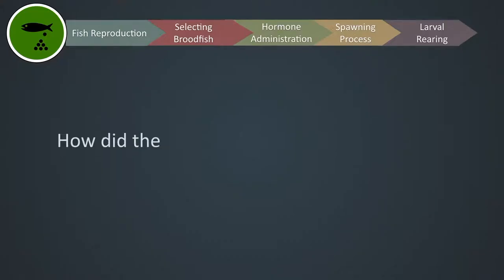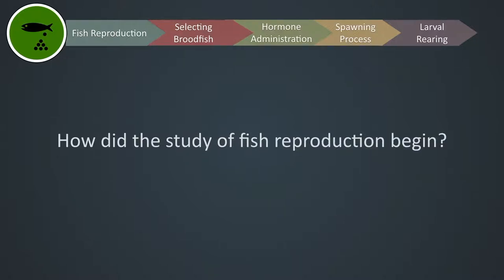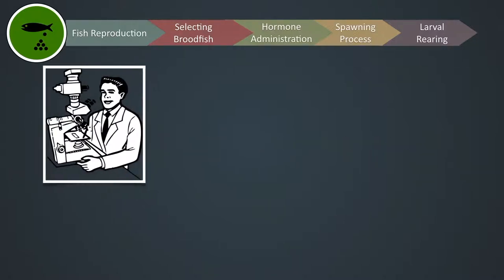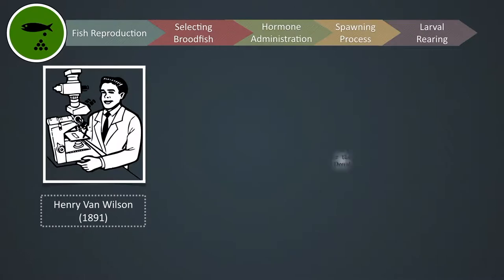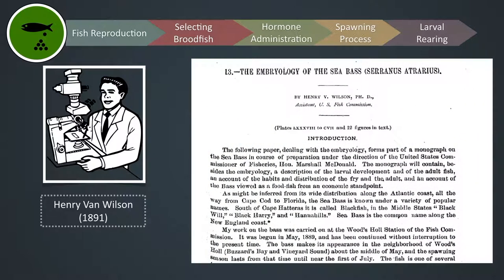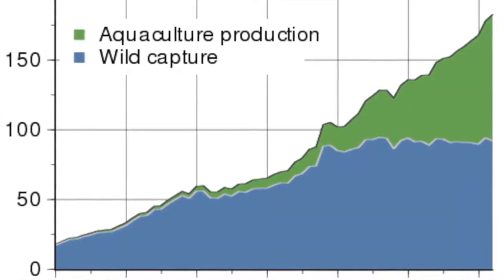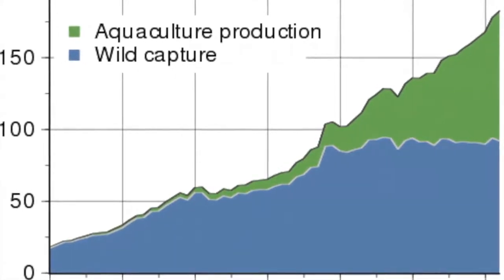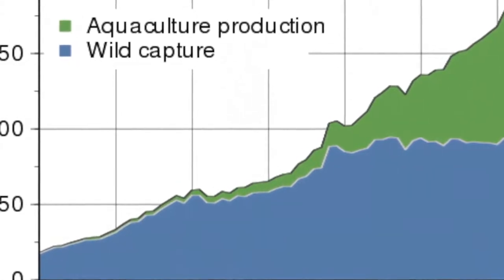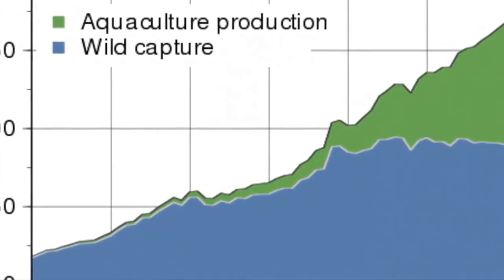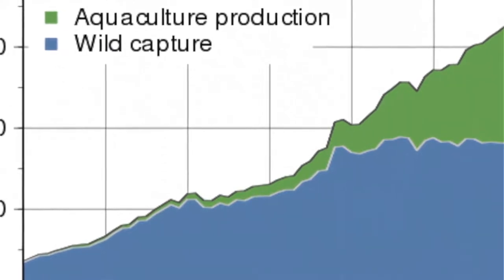So how did the study of fish reproduction begin? The study of fish reproduction has long been described in a thesis by Henry Van Wilson back in 1891, whereby he described the fertilization of black sea bass from eggs to adults. From there, discoveries of other species' reproduction methods have been growing and increasing, hence the aquaculture expansion. This resulted in increasing efforts to produce aquaculture species in the hatchery, and various techniques have been developed towards this objective.